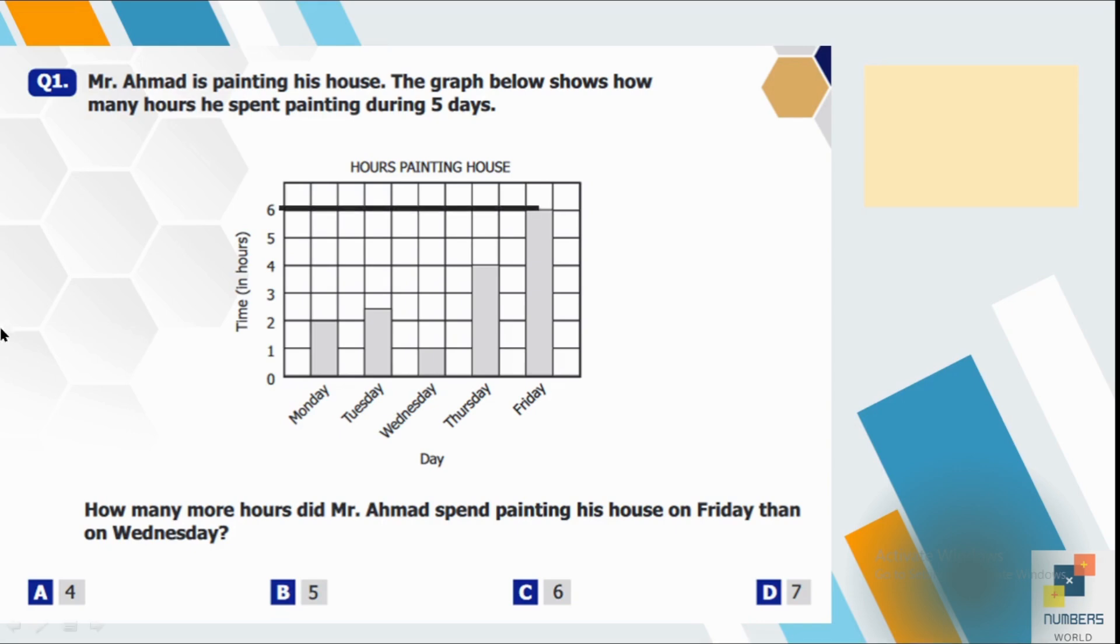So let's see. On Friday he spent 6 hours to paint his house and on Wednesday he used only 1 hour. So we are going to subtract 1 out of 6. The answer is 5. So B is our correct option over here.